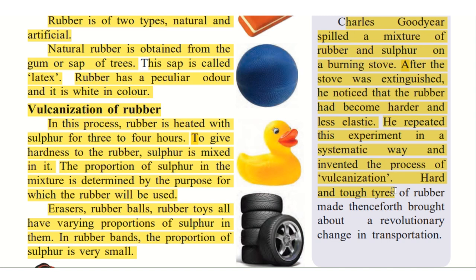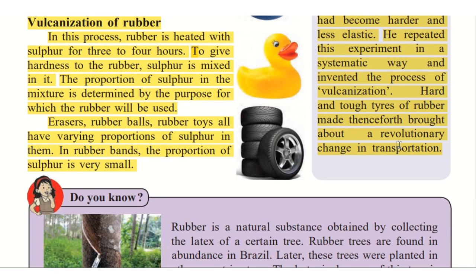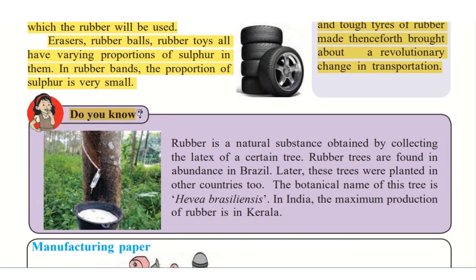Hard and tough tyres of rubber made henceforth brought about a revolutionary change in transportation. Revolutionary means they brought about a great change in transportation. First, they may have been using bullock carts or wheels that were not made of rubber. Later, they found that rubber tyres could be made as hard as possible, and that is how a great change came in making tyres.